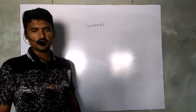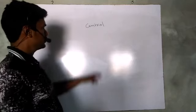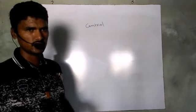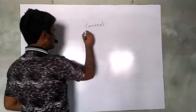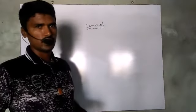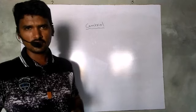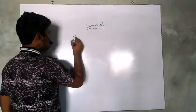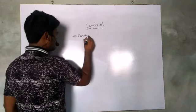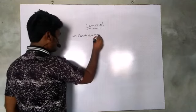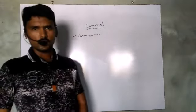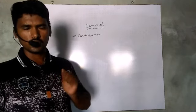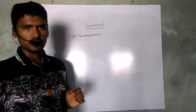In animal cells, the microtubule organizing center is present near the nucleus, which is known as a centrosome. Microtubules arise from this centrosome.